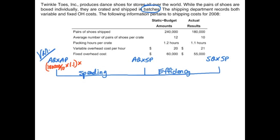180,000 divided by 10 gives us 18,000 crates. We need that in hours, so we multiply by the number of packing hours per crate — 1.1 hours per crate — to get our actual quantity. Then we multiply 18,000 crates times 1.1 hours per crate times our actual price of $21 per hour, giving us an actual cost of $415,800.